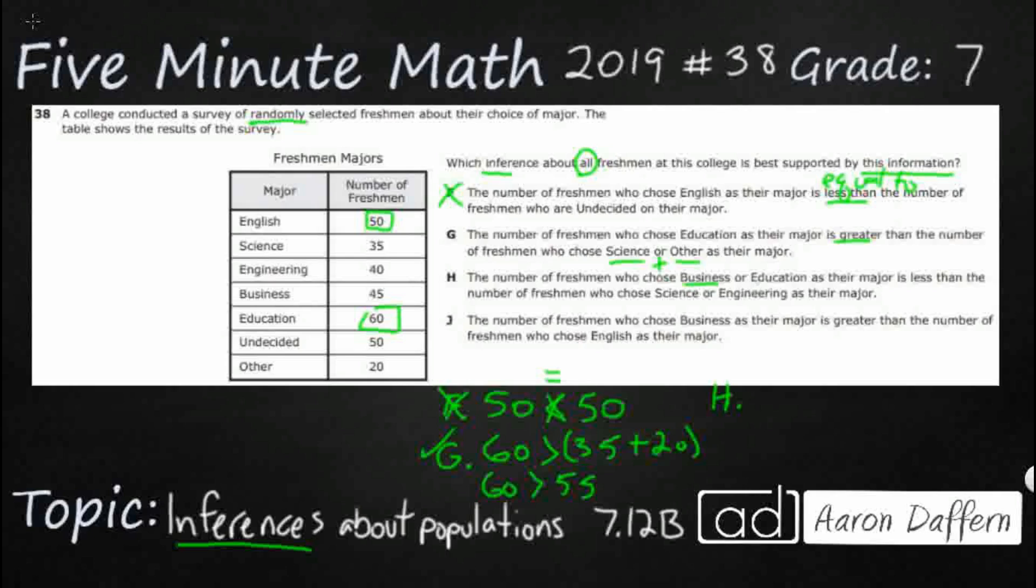H, the number of freshmen who chose business or education - business is 45, education is 60 - is less than the number of freshmen who chose science or engineering. So we have science 35 and engineering 40. Let's simplify that: 45 and 60 is 105. Do we say that 105 is less than 35 and 40, which is 75? Nope. That's incorrect. Greater than would have worked better. So let's check our J to make sure that it's incorrect.